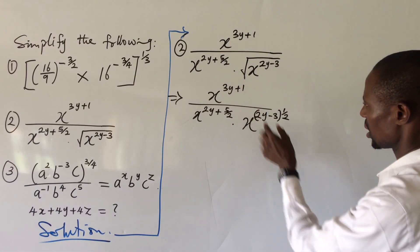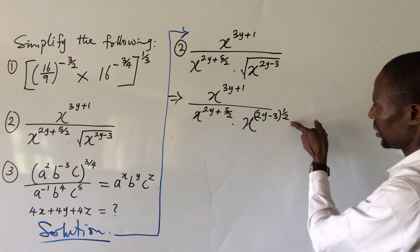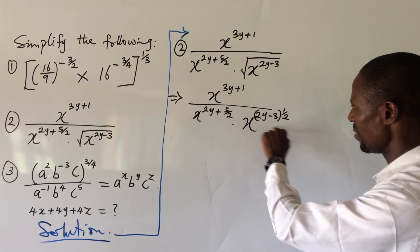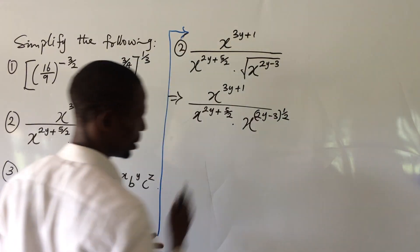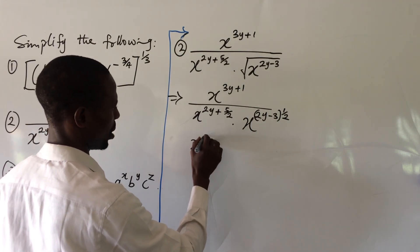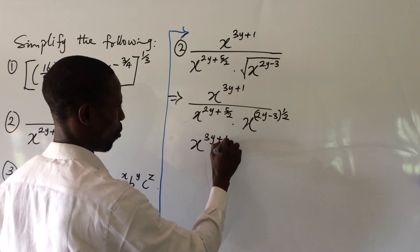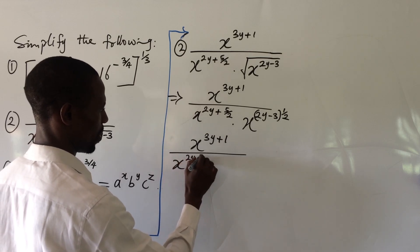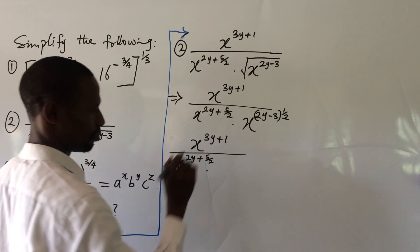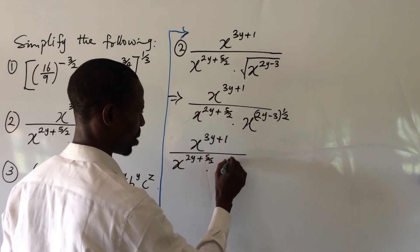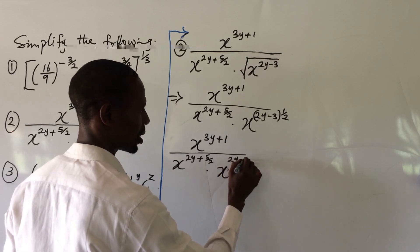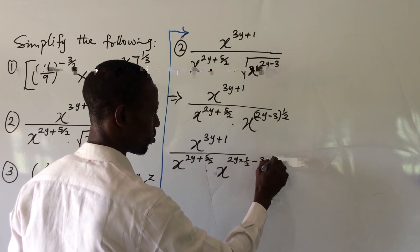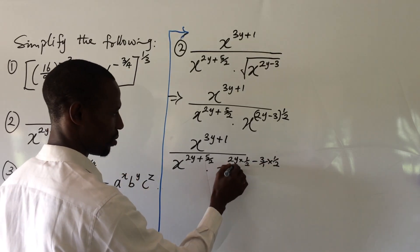We bring the square root out as a power of 1 over 2. All we need to do is use that power to multiply everything inside the bracket. So we distribute the 1 over 2 to get: x to the power of 3y plus 1, all over x to the power of 2y plus 5 over 2, times x to the power of 2y times 1 over 2, minus 3 over 1 times 1 over 2.